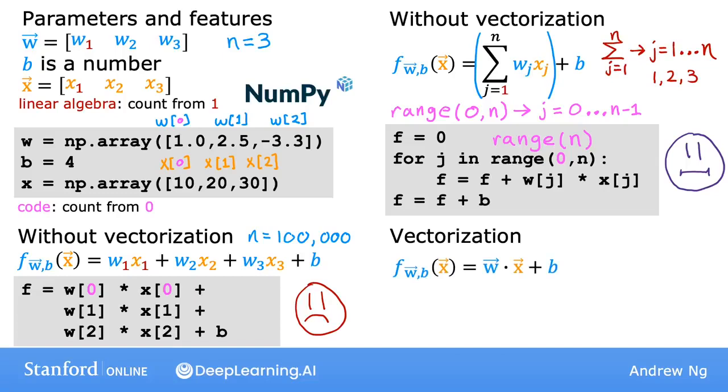This is the math expression of the function f, which is the dot product of w and x plus b. And now you can implement this with a single line of code by computing f = np.dot—I said 'dot dot' because the first dot is the period and the second dot is the function or the method called dot—but it's f = np.dot(w, x), and this implements the mathematical dot product between the vectors w and x.